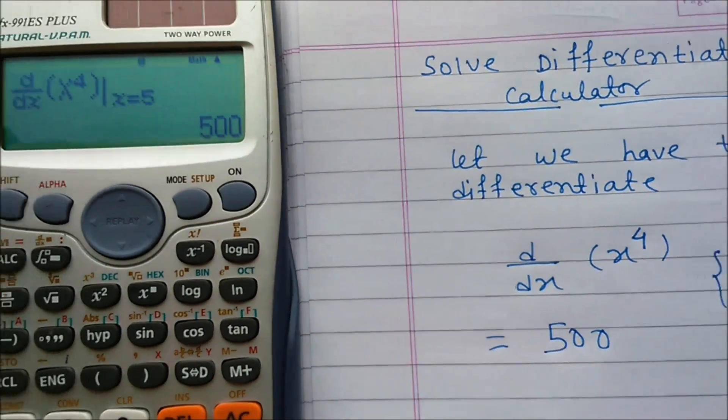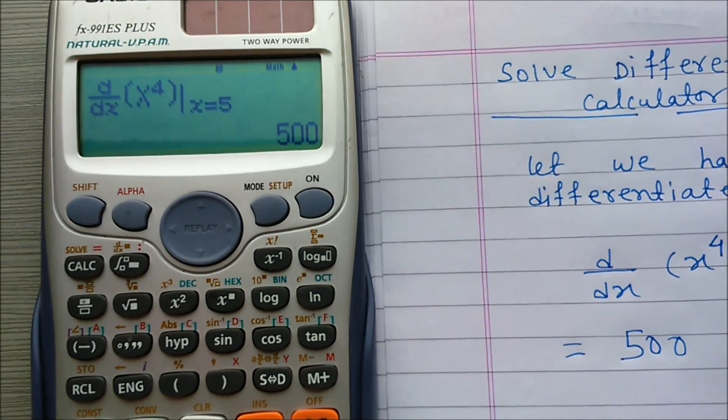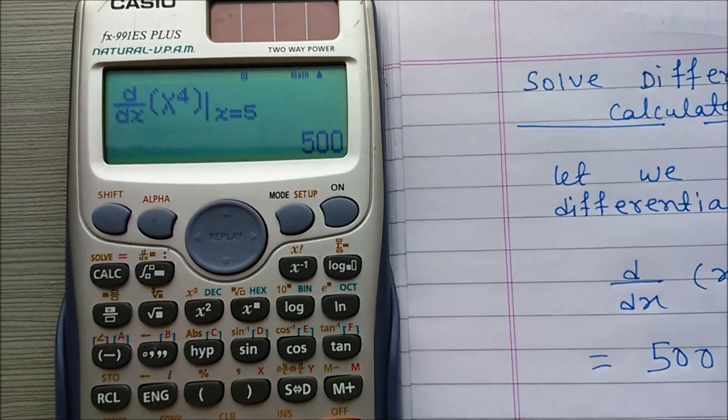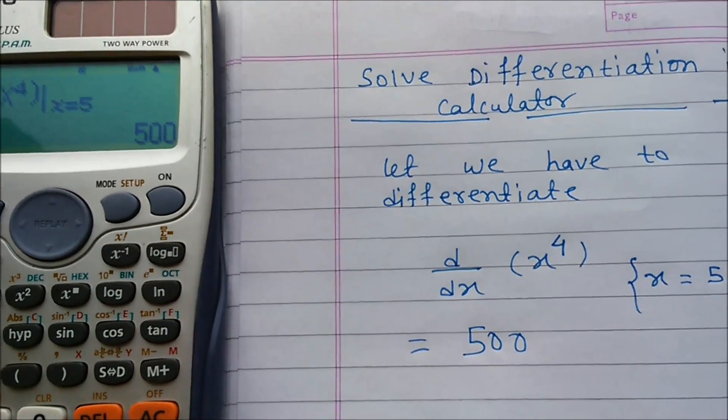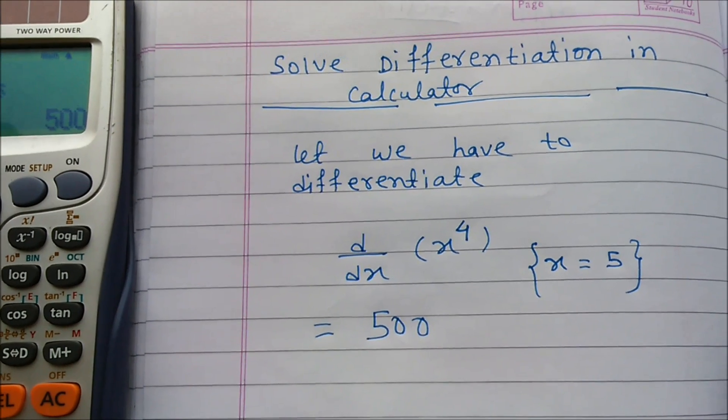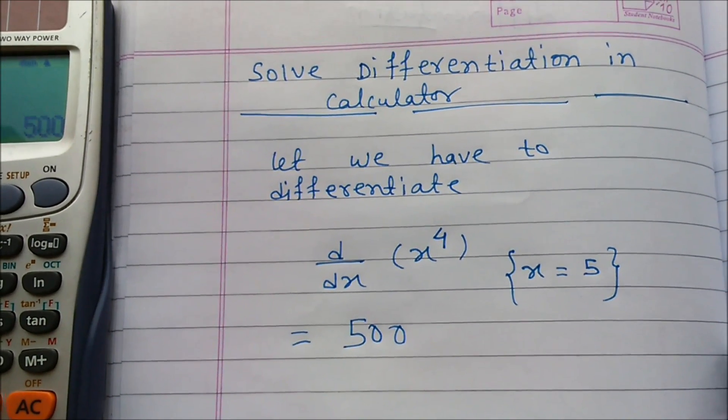So this is a shortcut way to differentiate easily in the calculator. d by dx x to the power 4, x equal to 5 is equal to 500. Thank you.